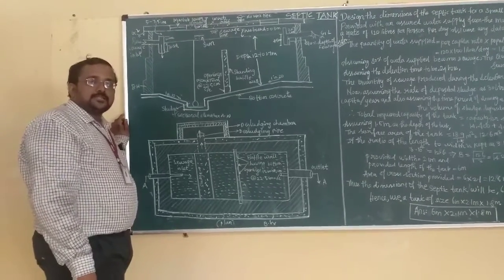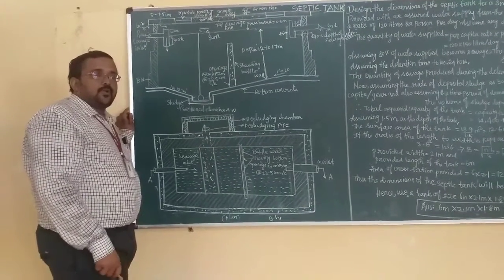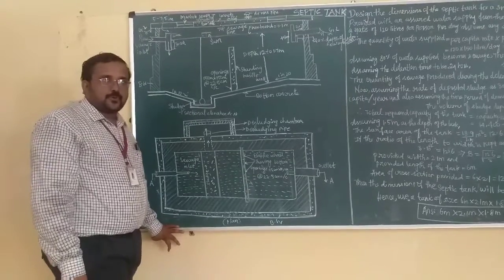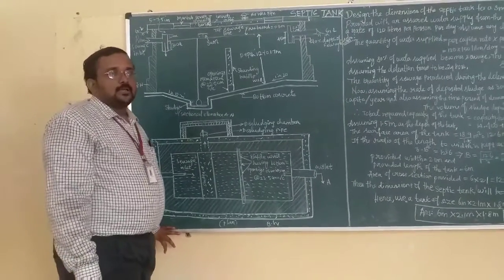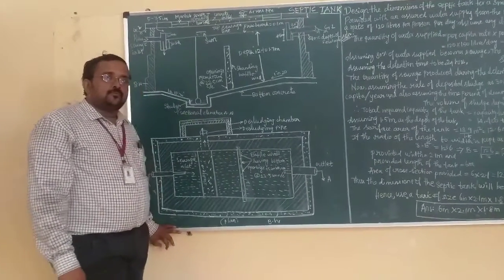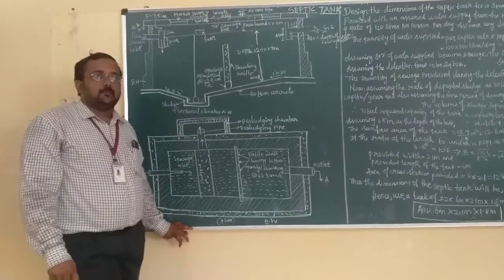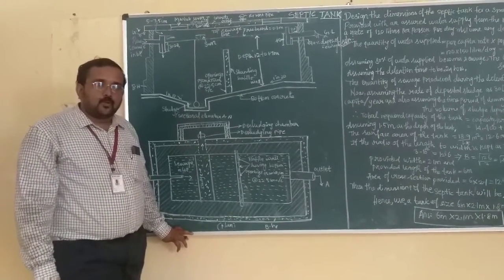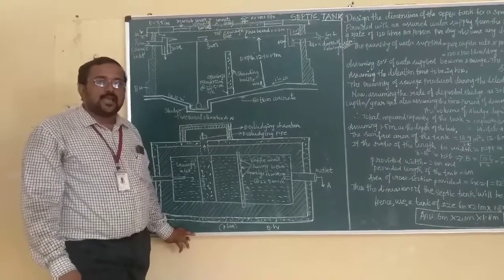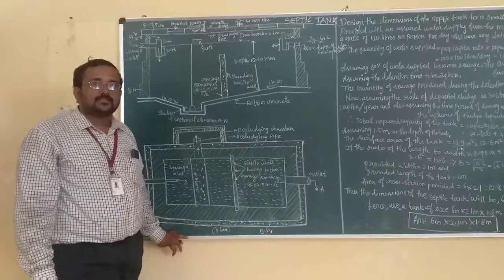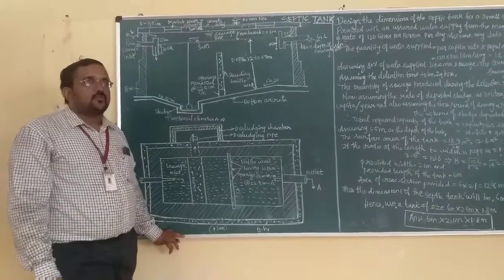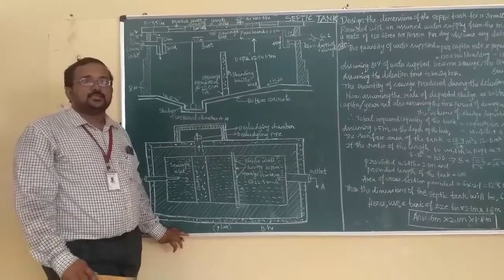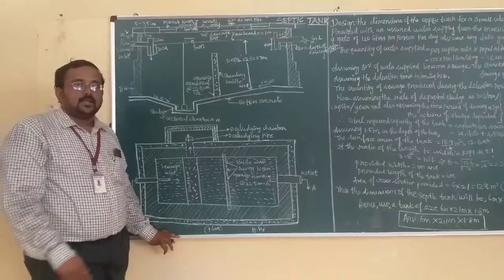It is used for onsite sanitation. What is onsite sanitation? The source of residential sewage is the houses. Onsite means the process of biodegrading the sewage happens at the site itself. It is decomposed to sludge. That is onsite sanitation. The septic tank is used for that.